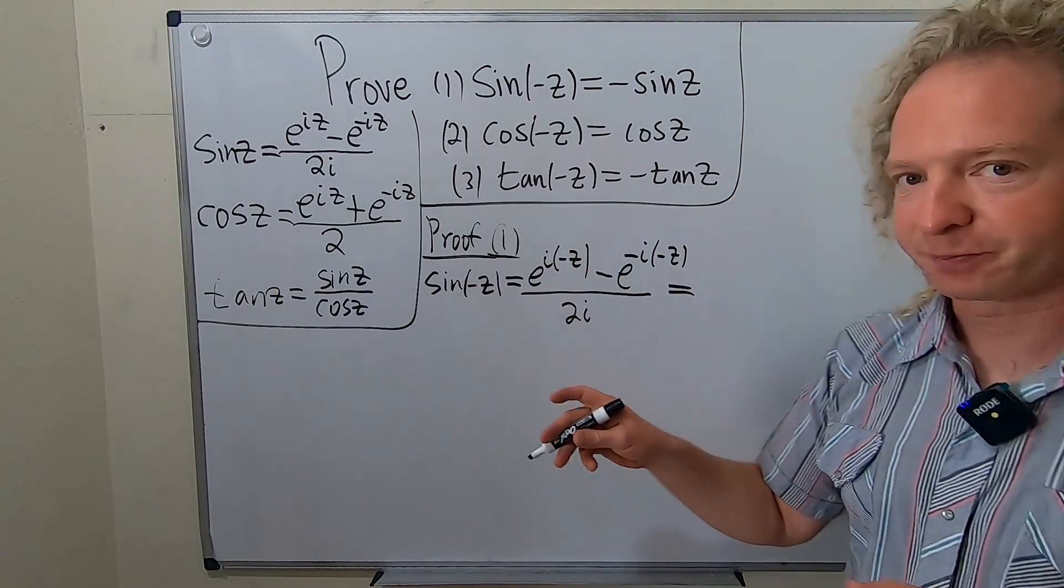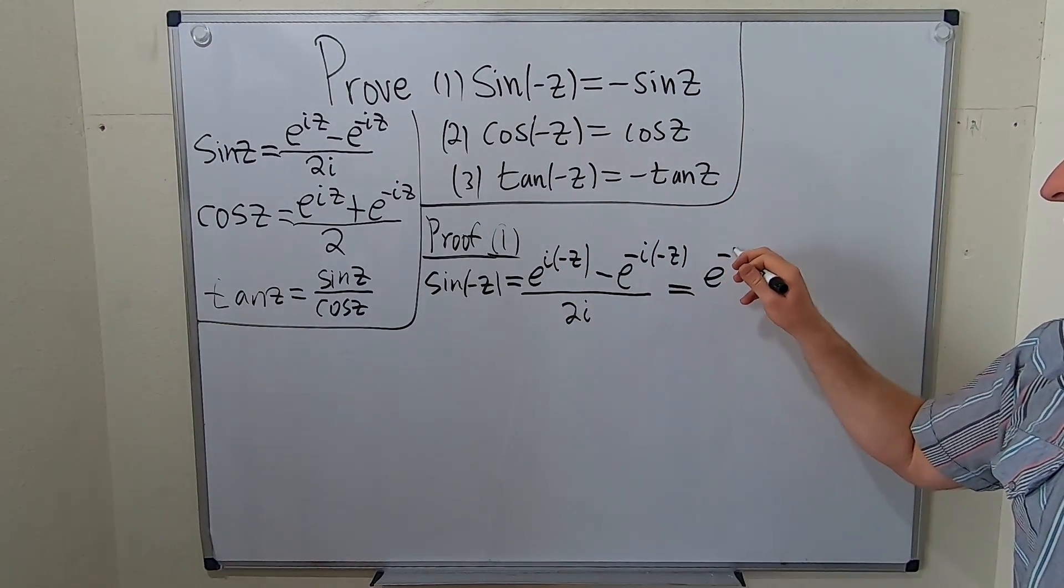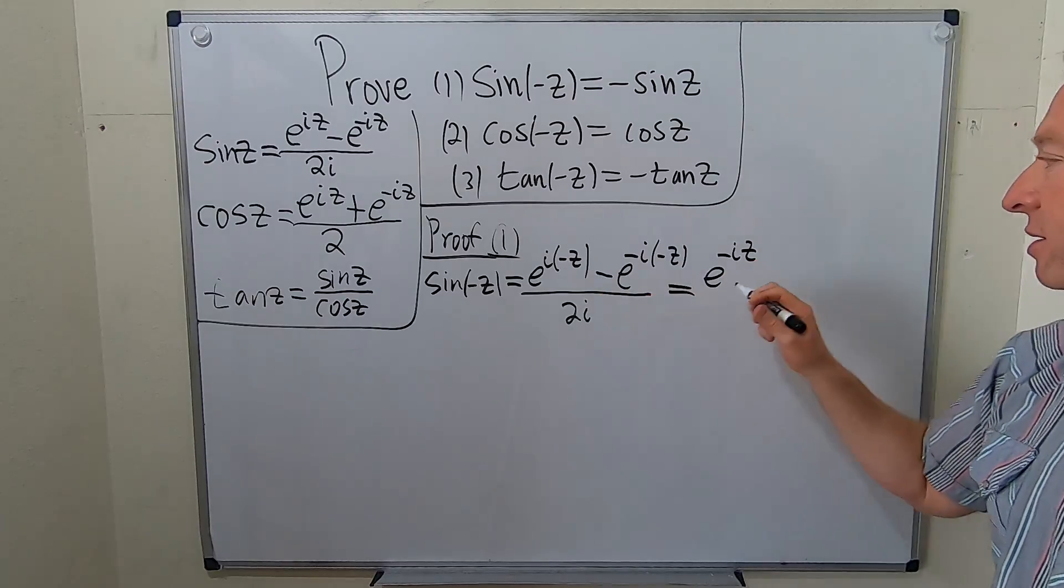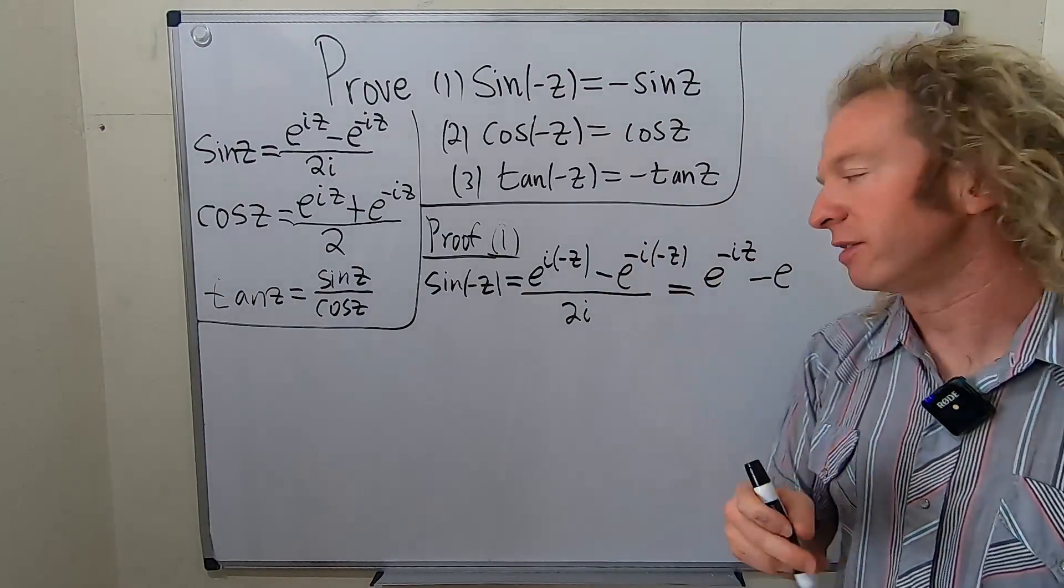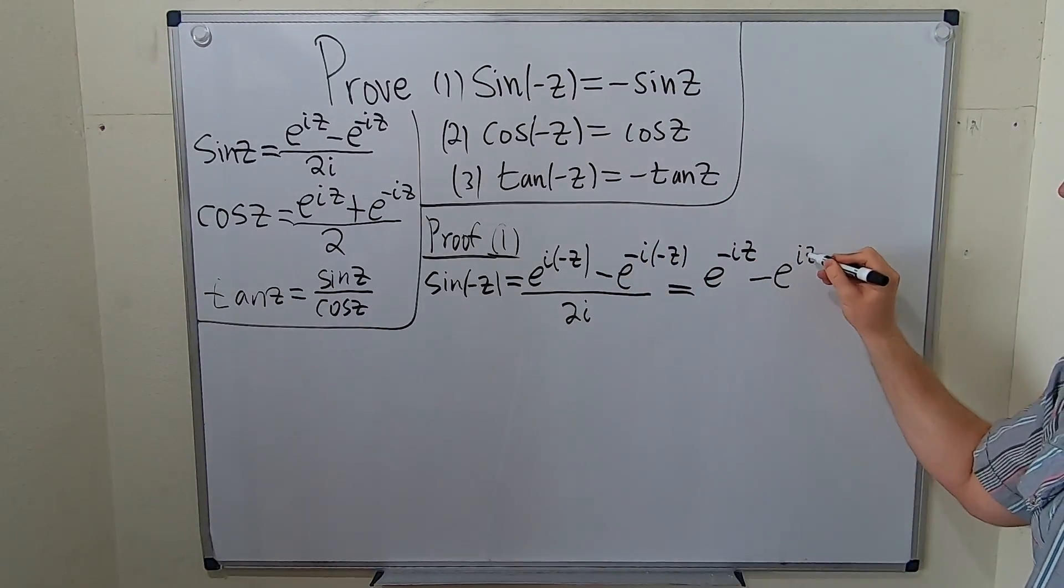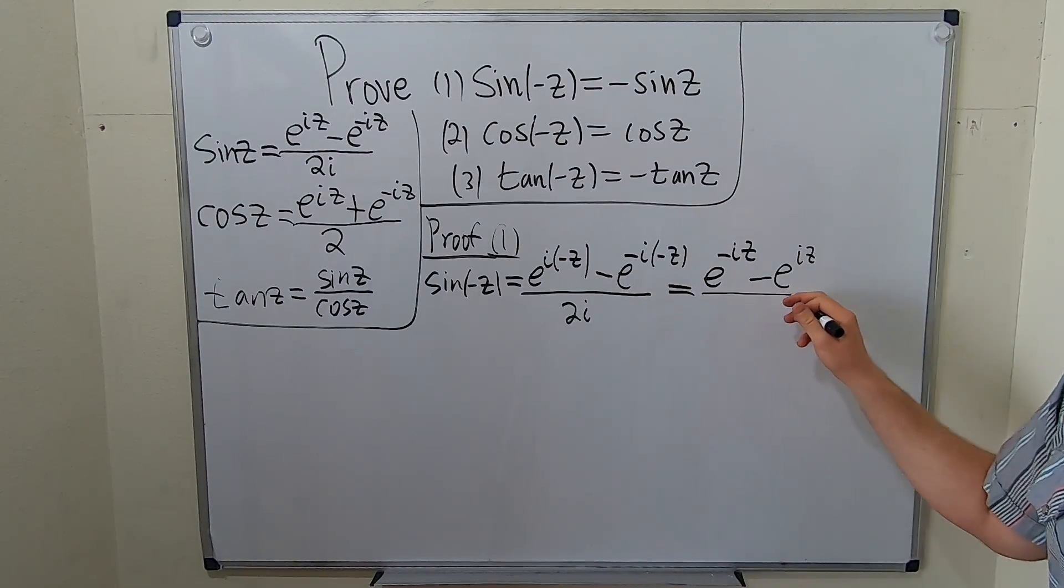So this is equal to e to the negative iz minus e - negative and negative is positive, right? So this becomes iz and it's all over 2i.